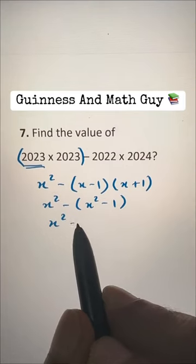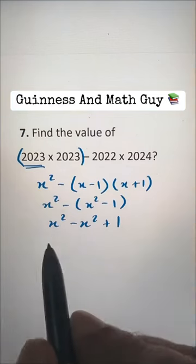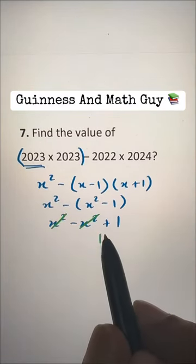This will be X squared minus X squared. Then this minus minus will become plus. Now we can cancel these with each other plus and minus. And we have the answer 1.